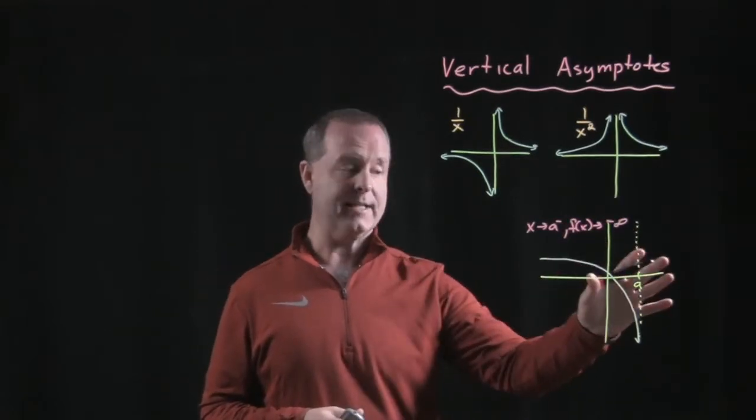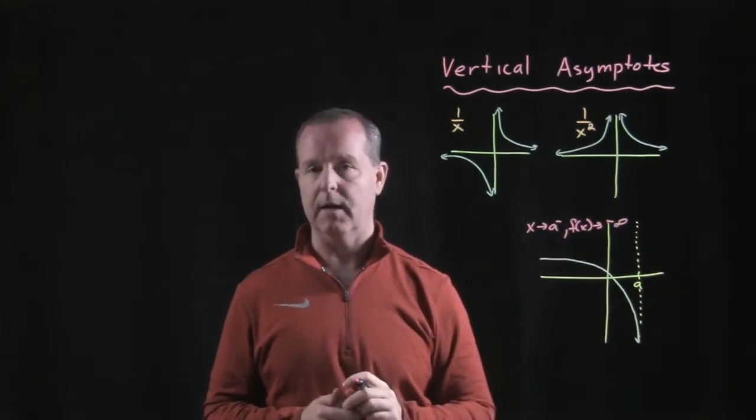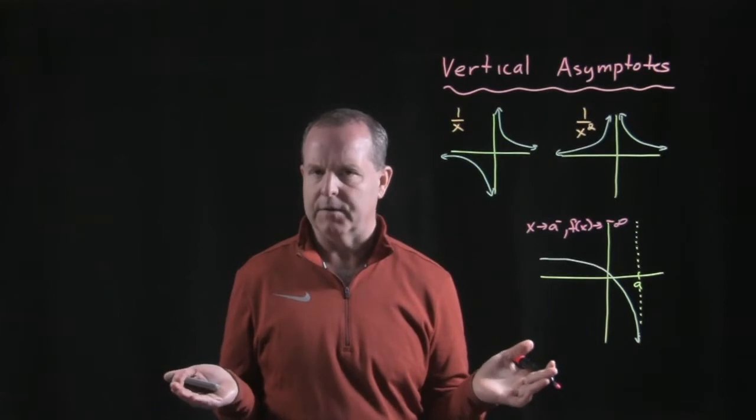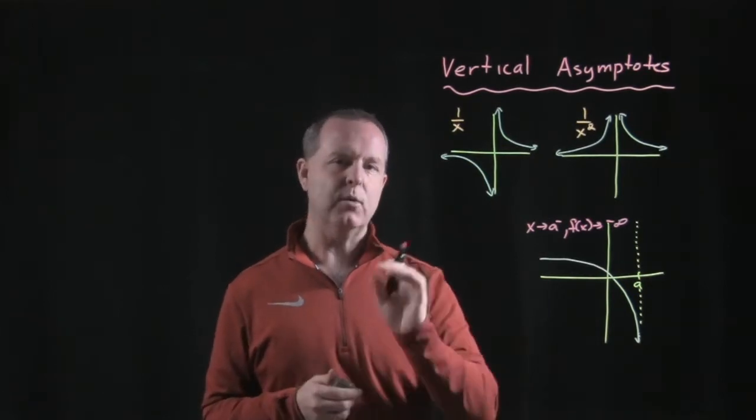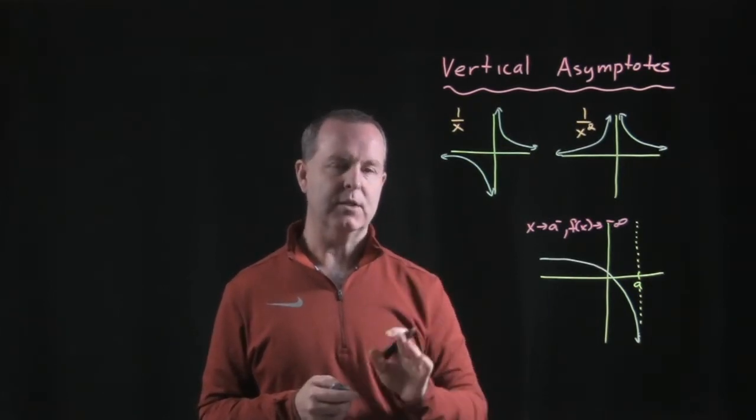So we can have asymptotes or vertical asymptotes at any place along the line. So how do we identify those? Where do we find them at? How do we locate them? Let's go through a couple of examples to show you how.